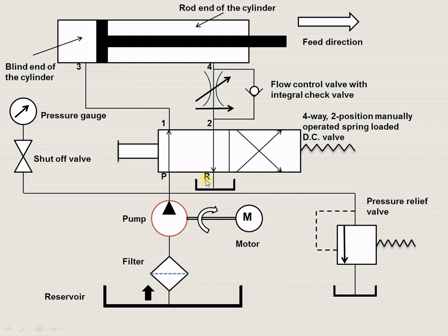This is the pump port P and this is the reservoir port R. This is the direction control valve with four ways — P, R, 1 and 2 — so it is known as a four-way valve. There are two positions, left and right envelope mode, making it a two-position valve. It is manually operated and spring controlled. This is the flow control valve showing a restricted opening, and it is integral with a one-way valve or check valve.